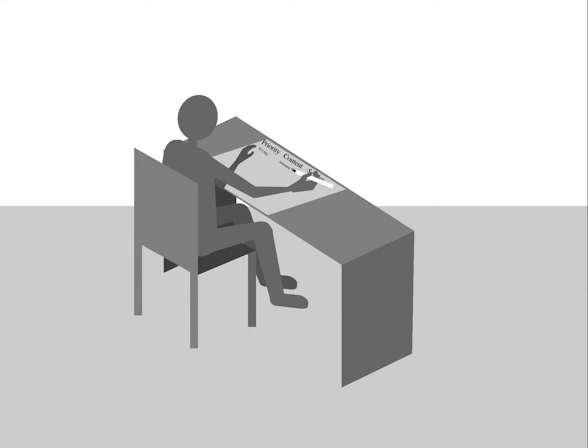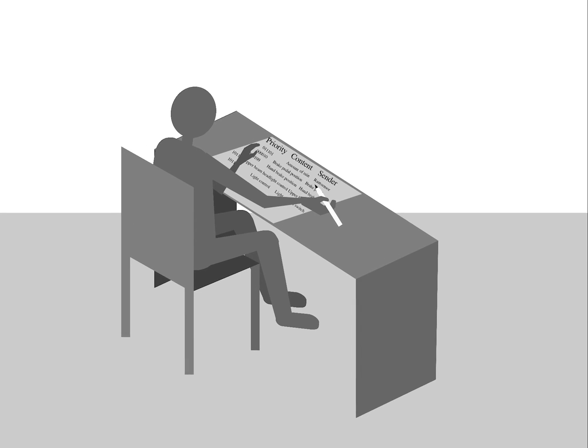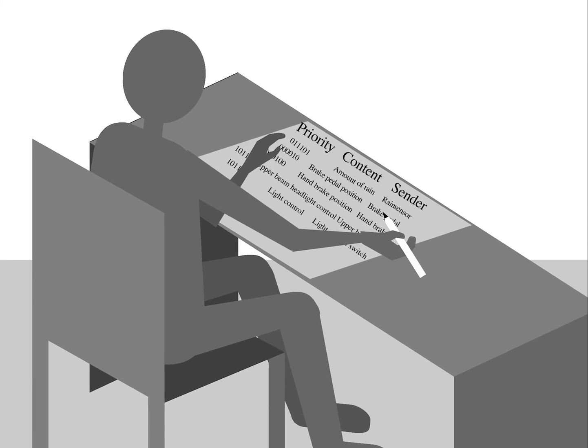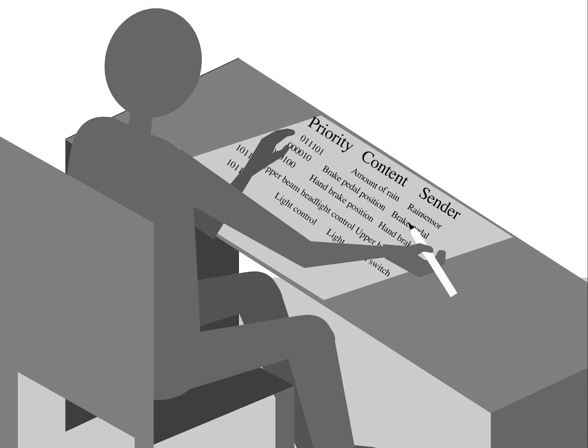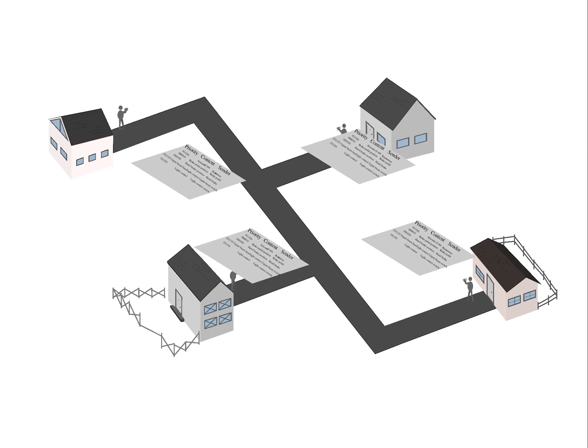For every such village, a list is generated that contains all number plates, identifiers, what content each represents and which household or ECU generates that content, called the message catalogue in CAN. All households are developed with that list in mind.